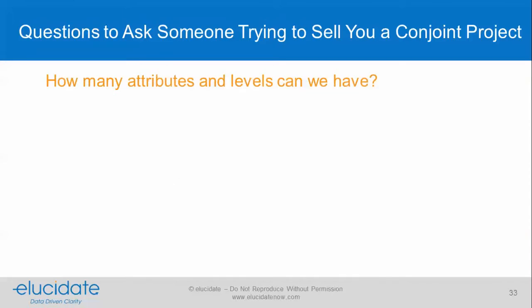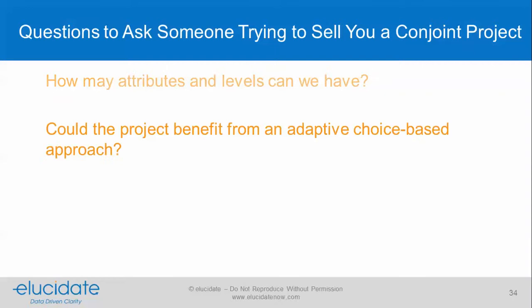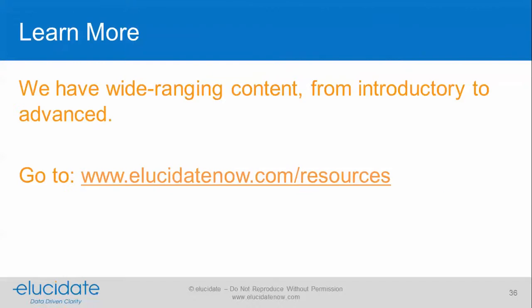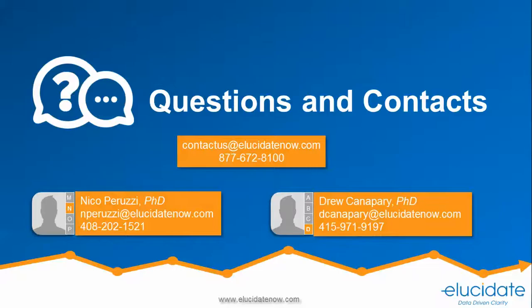Questions to ask someone trying to sell you a conjoint project: How many attributes and levels can we have? Could the project benefit from an adaptive choice-based approach? And what options do we have for price display and modeling? We have a lot more content on our website, elucidatenow.com. If you have any questions, give us a call. Thanks.